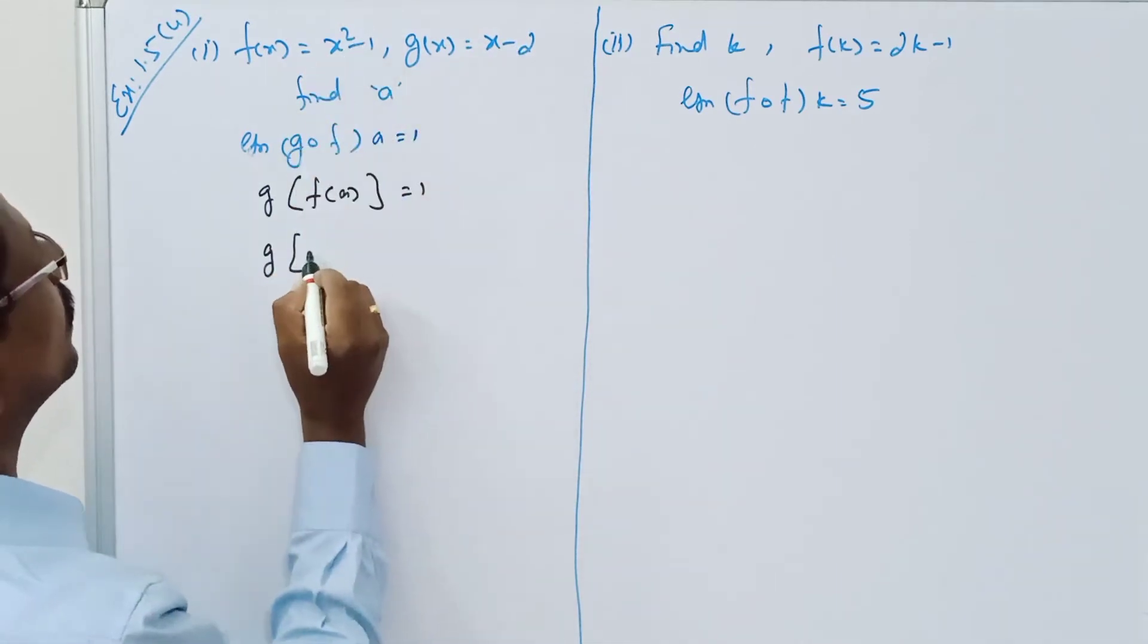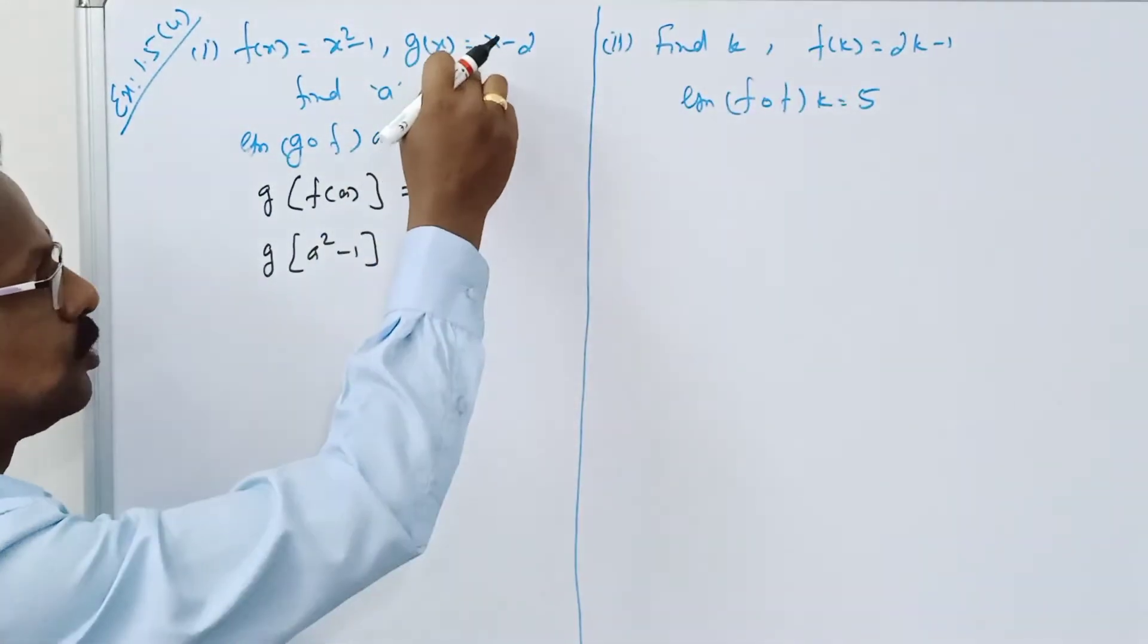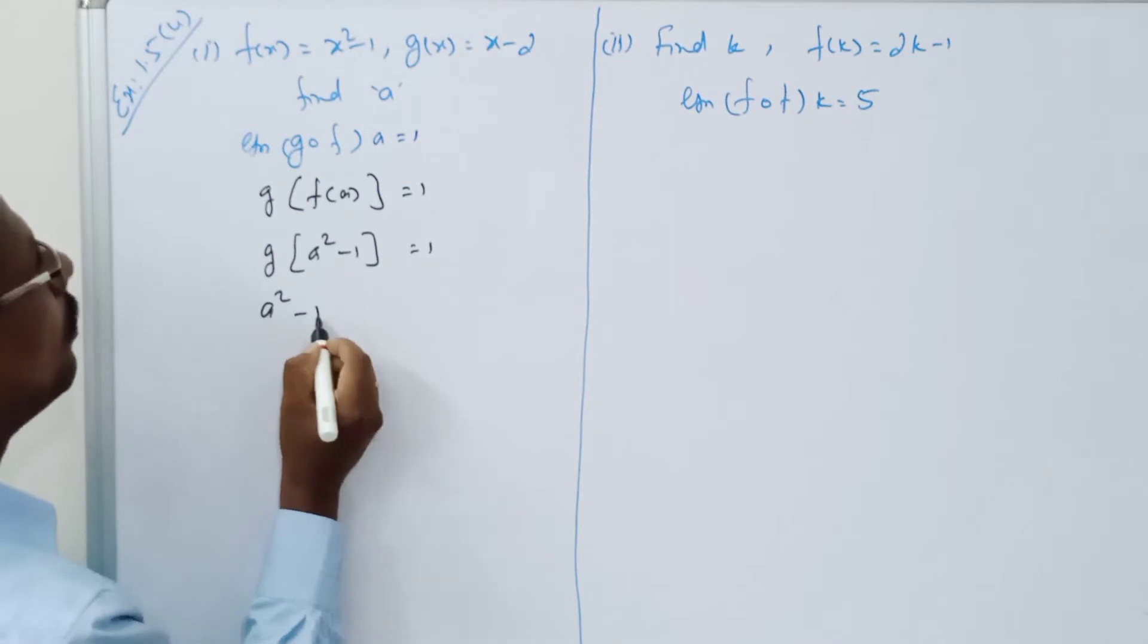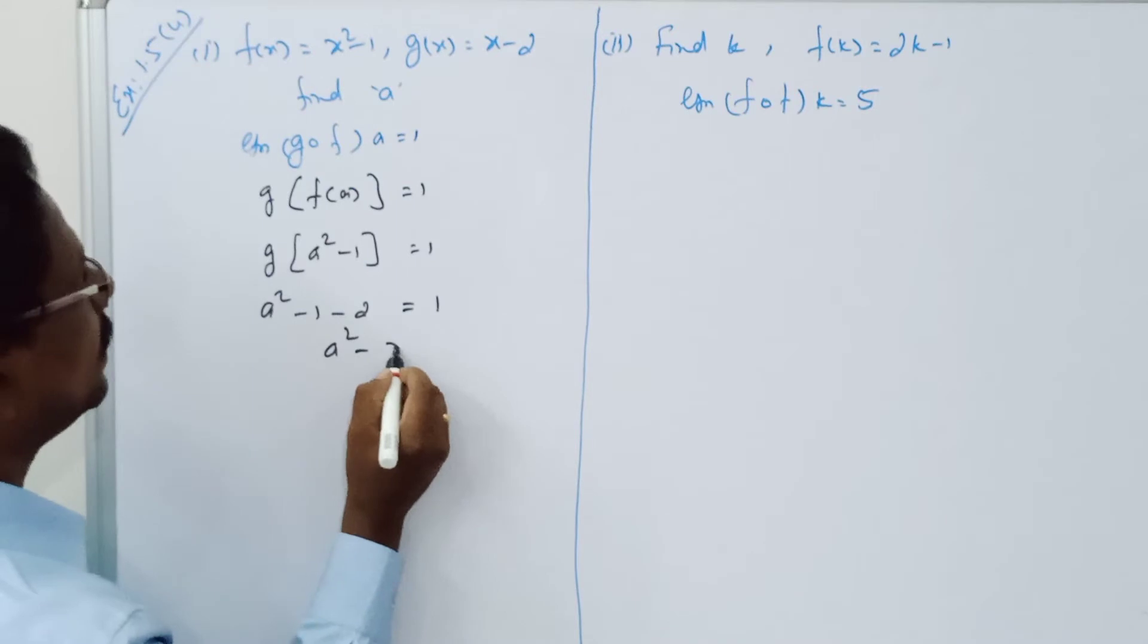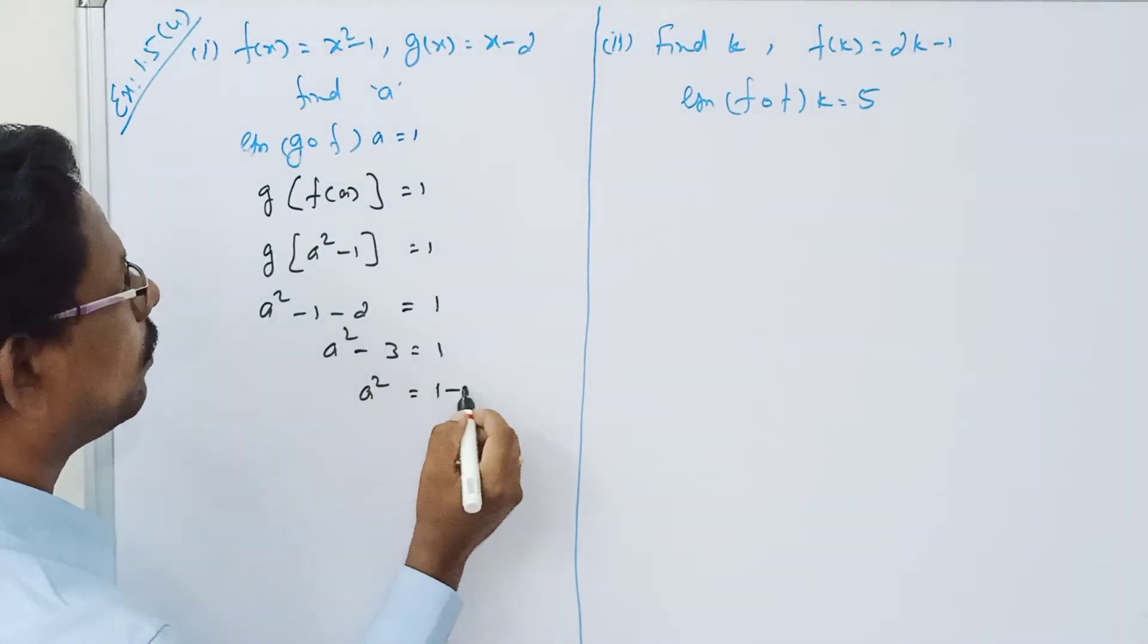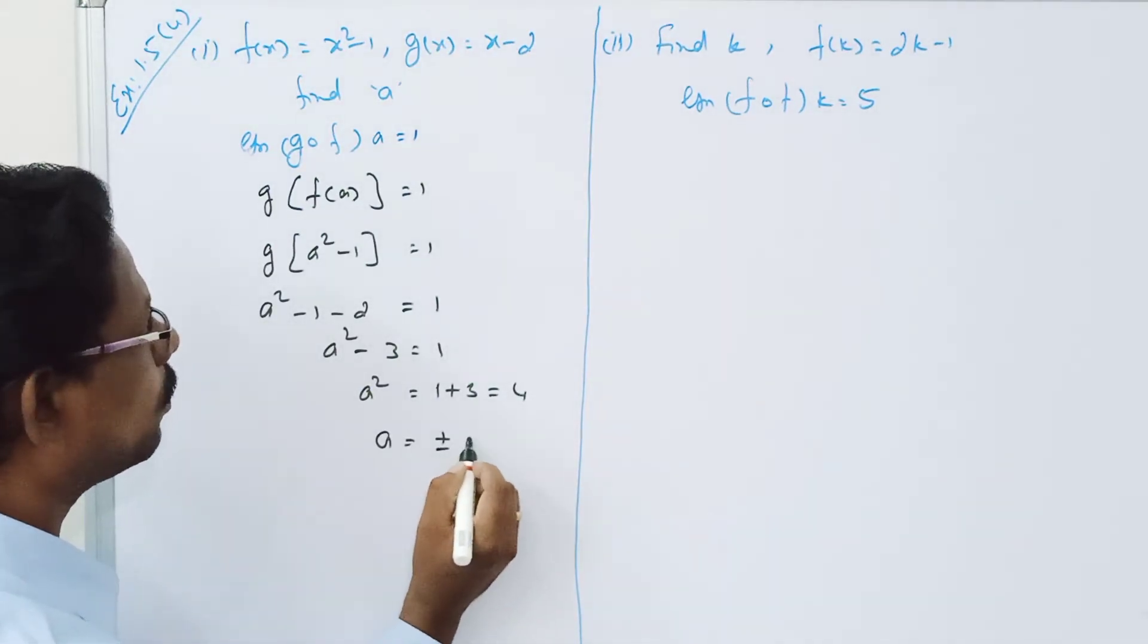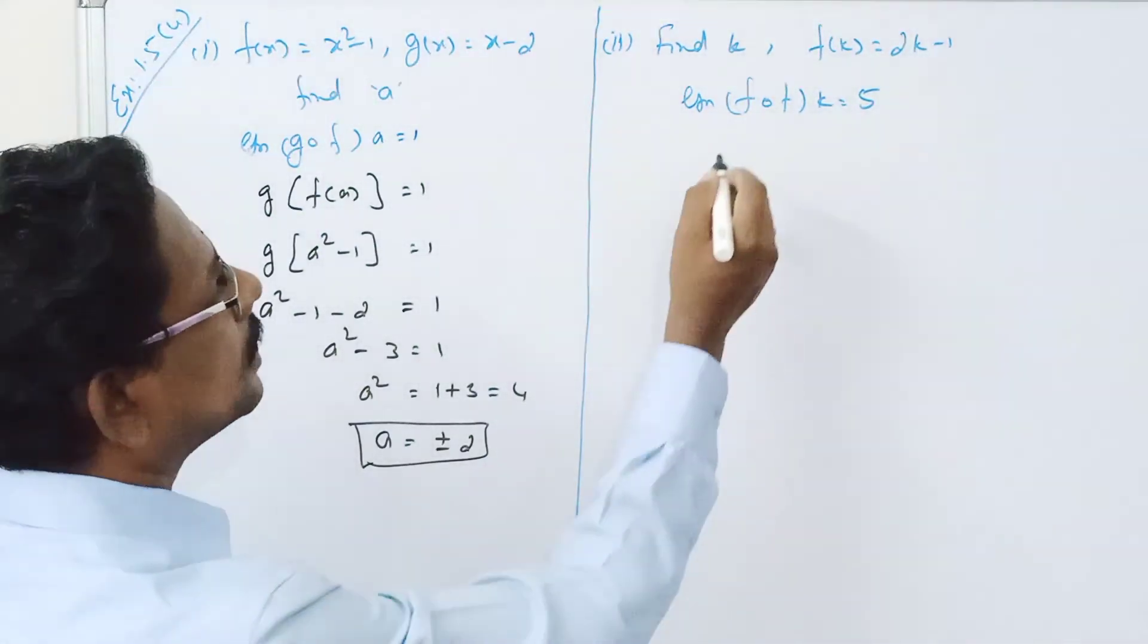f of a here is a square minus 1 equal to 1. So a square minus 1 minus 2 equal to 1, a square minus 3 equal to 1, a square equal to 1 plus 3 equal to 4. Therefore a equal to plus or minus 2.